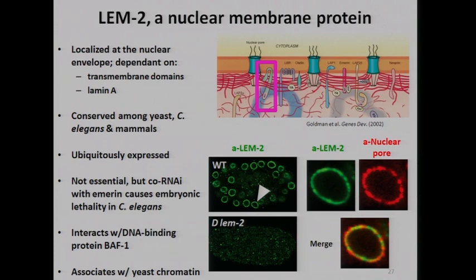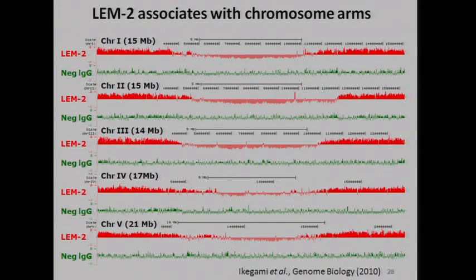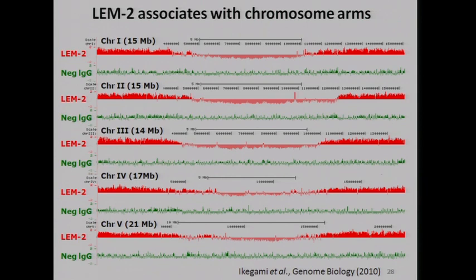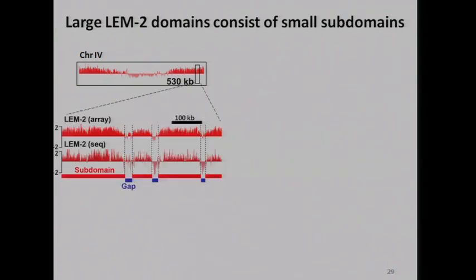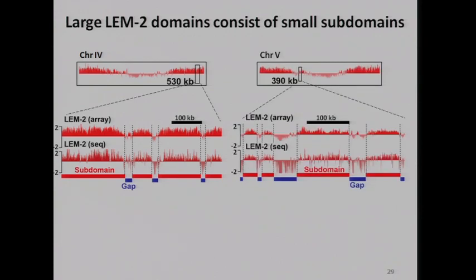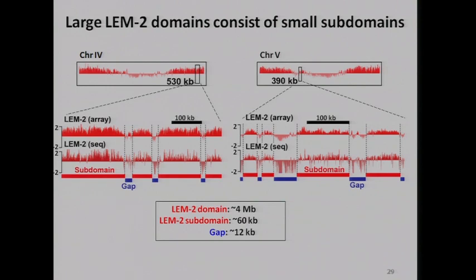Instead of lamin, we use a protein called LEM2, a nuclear membrane protein that interacts with lamins and chromatin, and did chromatin IP. We got a really striking result: the arms of the C. elegans chromosomes are highly associated with the nuclear membrane, and the centers are looped out. These large LEM2 domains consist of small subdomains — not continuous but discontinuous associations with small gaps breaking up subdomains within larger regions. A typical gap is about 12 kb, whereas a typical subdomain might be 60 kb.